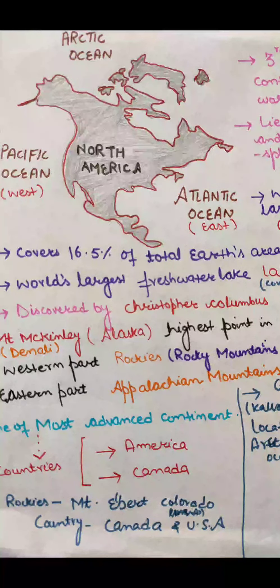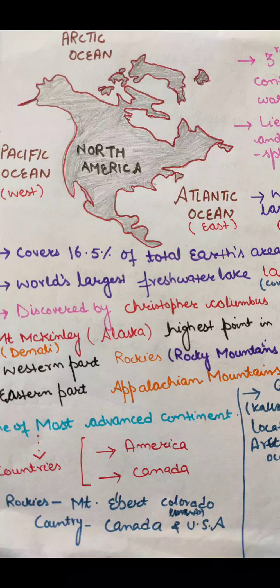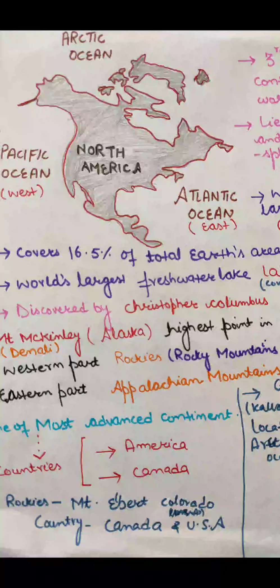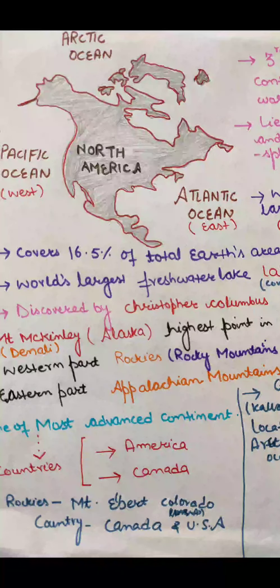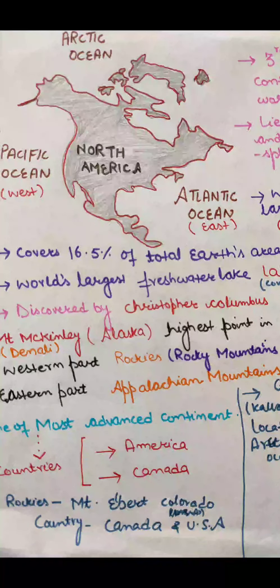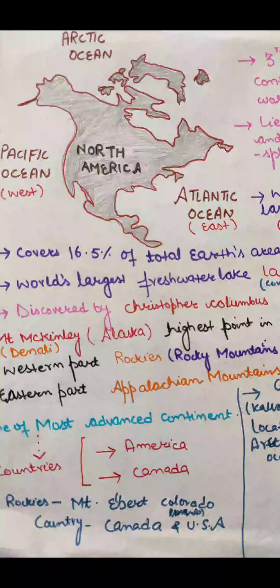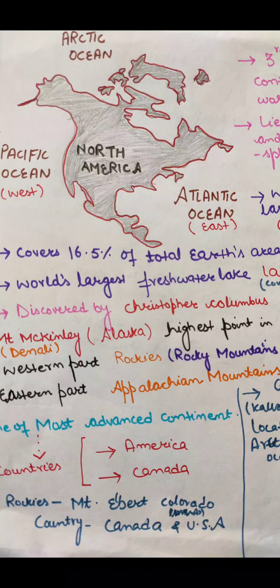So this is a general introduction about North America. To summarize: North America is the third largest continent of the world, it covers 16.5 percent of total earth's area, and North America is surrounded by water bodies on three sides.